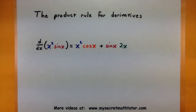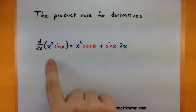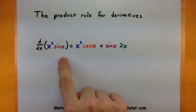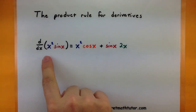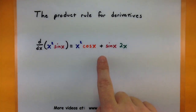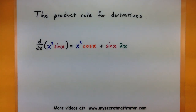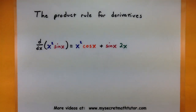Welcome to My Secret Math Tutor. For this video, we're going to work on the product rule for derivatives. This is a really cool rule that we want to use when we have two functions that are being multiplied together. And as you can see, a lot of things happen in this rule, so you want to be able to keep all of the pieces straight. Let's get into the formula for this, as well as tips on how to use it.